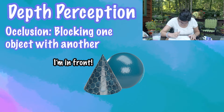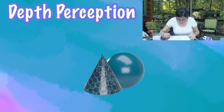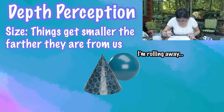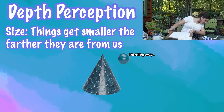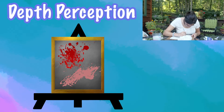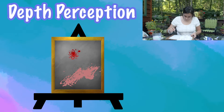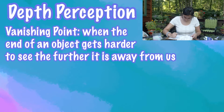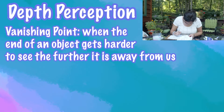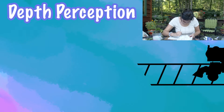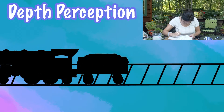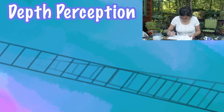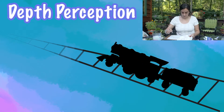The illusion of depth is also created using size. Things farther away from us look smaller than things closer to us. So when you're painting, if you want something to seem farther away, you can make it smaller. Also, as objects move away from us, they shrink so small that often you can't even see where they end. We call this the vanishing point.